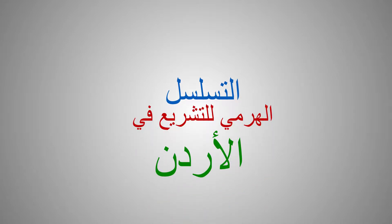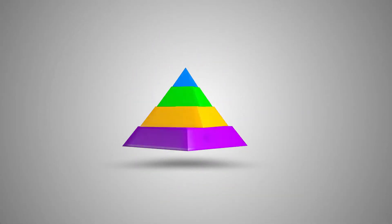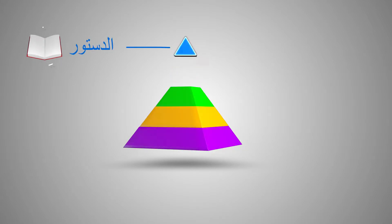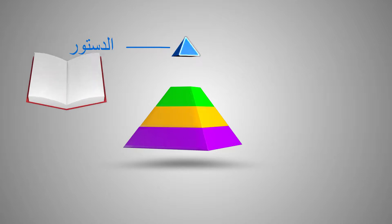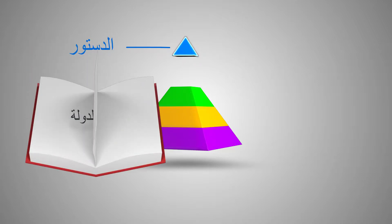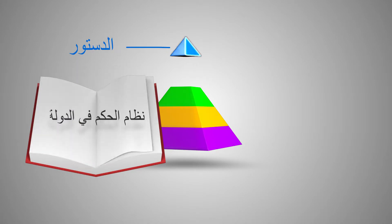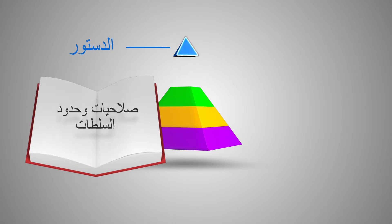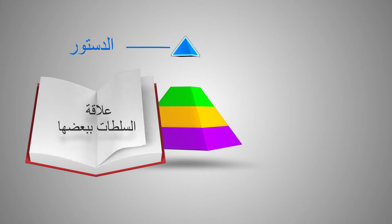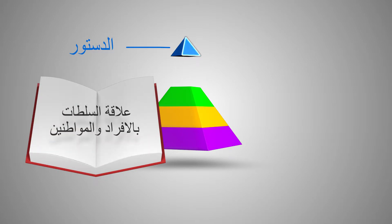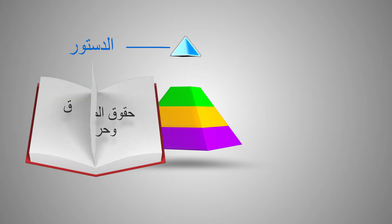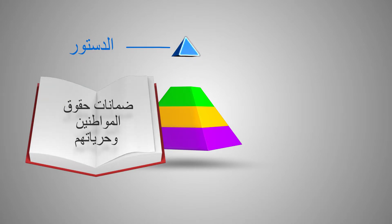Hierarchy of the Legislative Process in Jordan. First, the Constitution. The Constitution comes first in the legislative process, being the core legislator that defines the type of state, regime, powers and authorities, as well as the relations between authorities and relations between authorities and citizens, citizens' rights and liberties, and guarantees of citizens' rights and liberties.